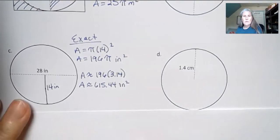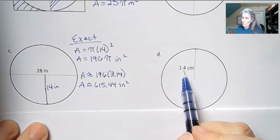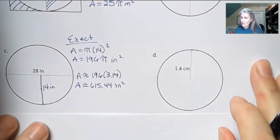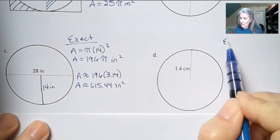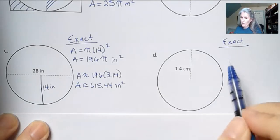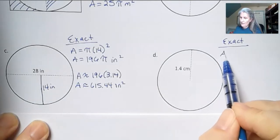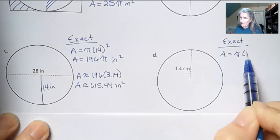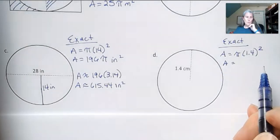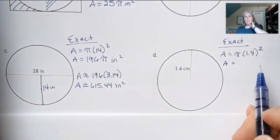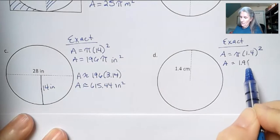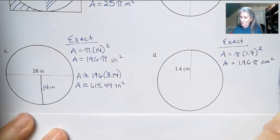So what about the next one? Well, the next one, interestingly, is 1.4 as opposed to 14. So maybe you could guess what some of these answers are going to be knowing that we're just changing the decimal point. We've just moved it over one place. My exact answer is going to be pi times 1.4 squared. And that's going to give me 1.96. So see how it's similar to the last answer of 196. It's 1.96 pi. And then we have centimeters squared. That's my exact.